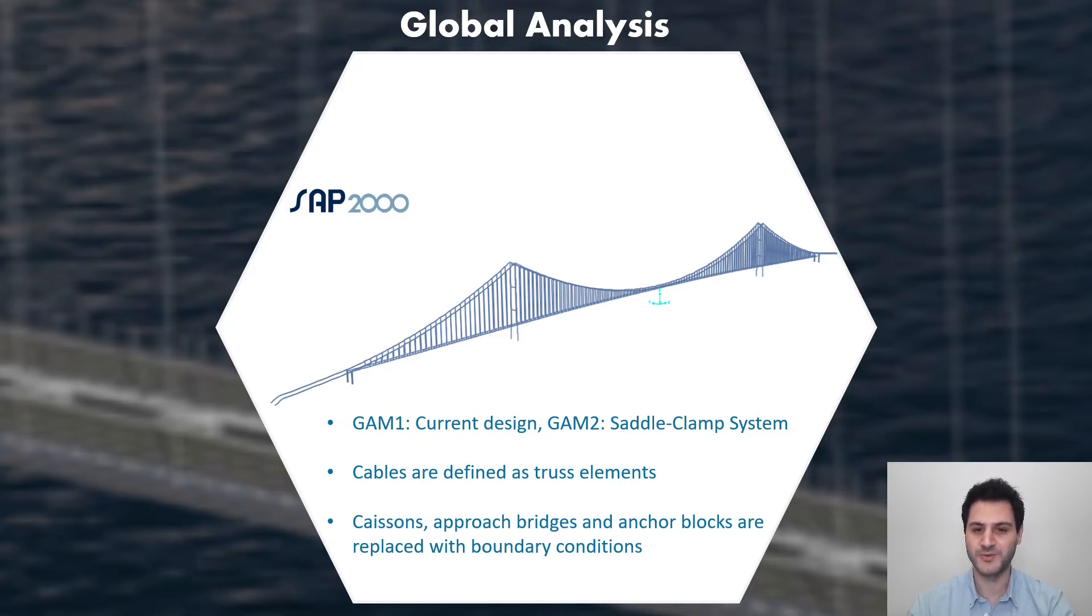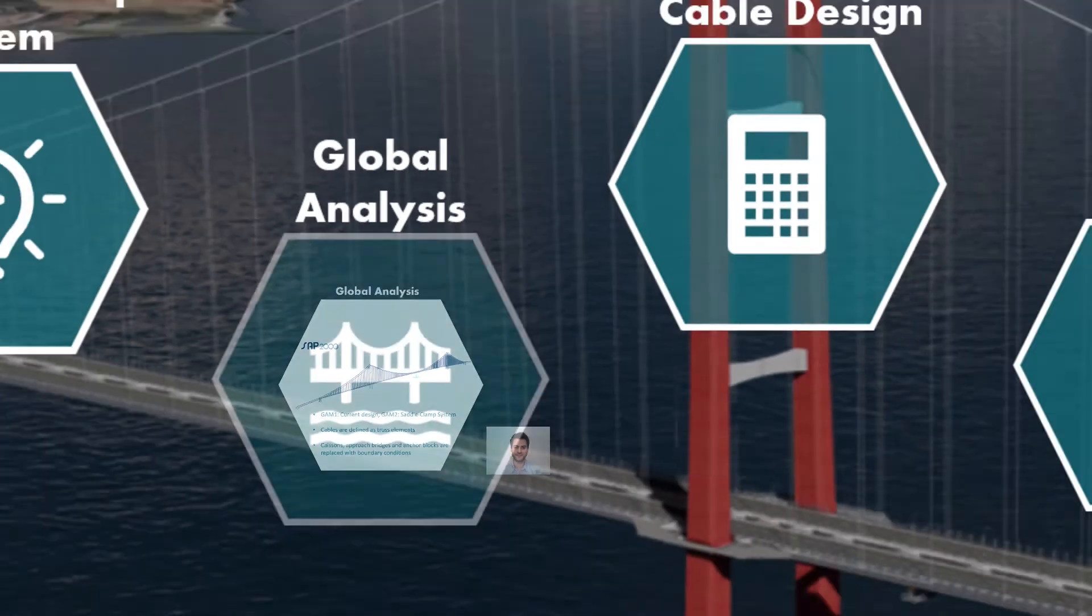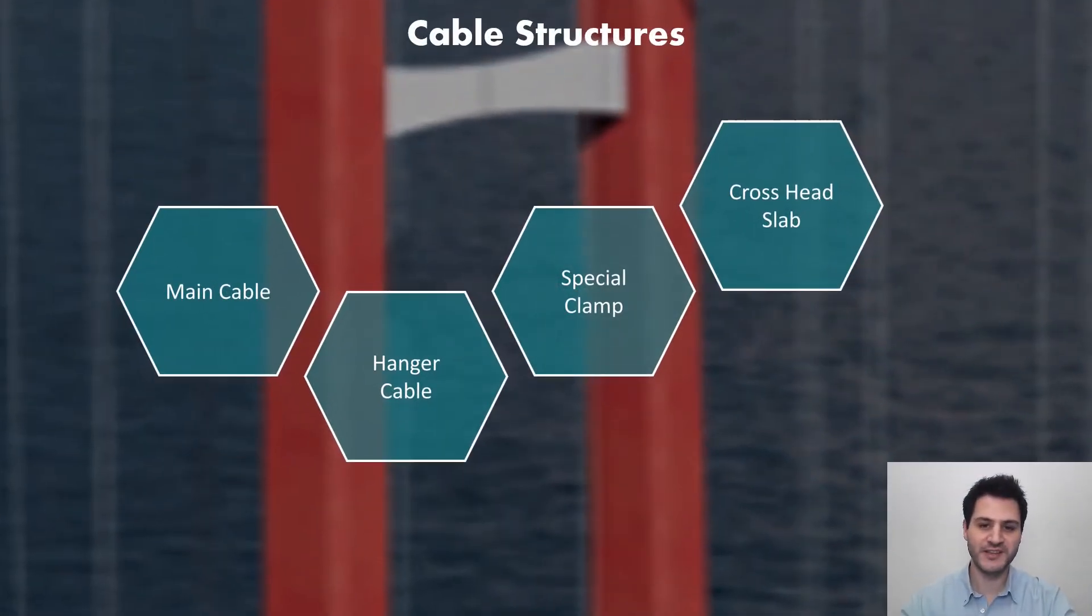Caissons, approach bridges, and anchor blocks are not defined in the global models, since they have no noticeable effect on design of cable structures. Instead, boundary conditions are applied to avoid increased computational time.